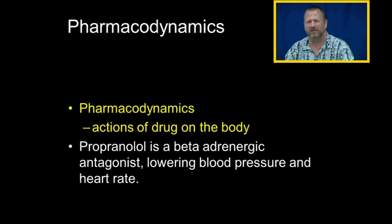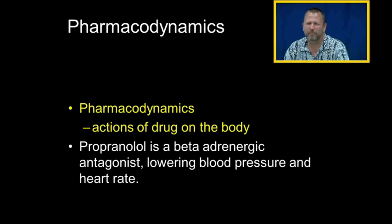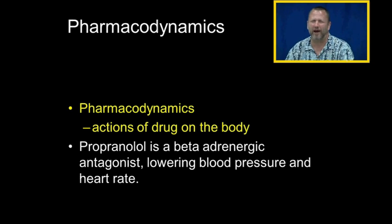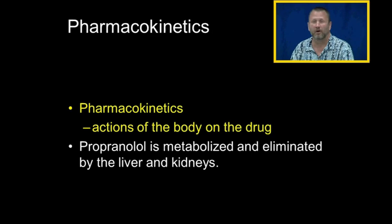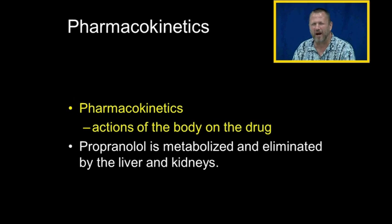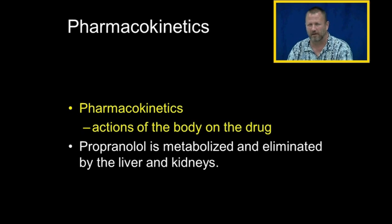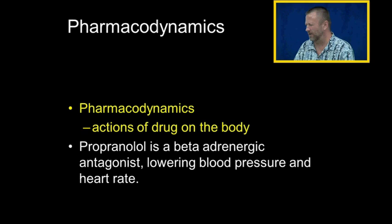Pharmacodynamics is the actions of a drug on the body. For instance, propranolol is a beta blocker — a beta adrenergic antagonist — that lowers blood pressure and heart rate. That's the action of propranolol on the body. Pharmacokinetics, on the other hand, are the actions of the body on the drug. Propranolol is metabolized and eliminated by both the liver and the kidneys — that's what the body does to the drug. It's very important to know the difference between dynamics and kinetics.